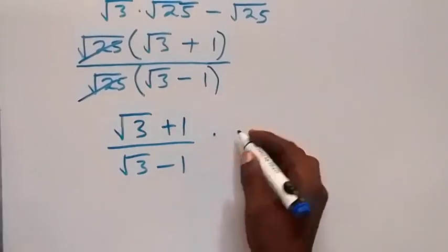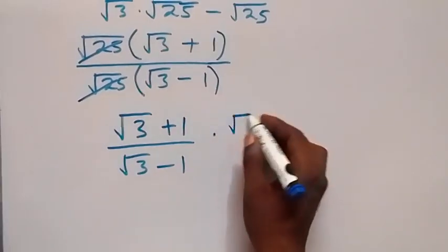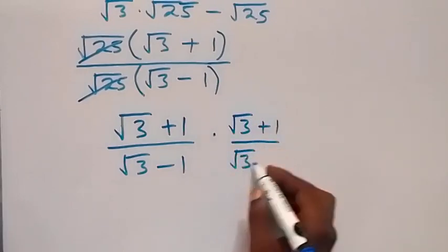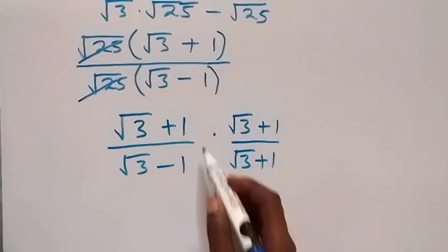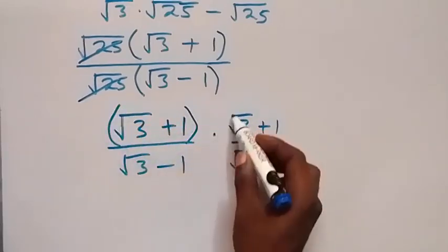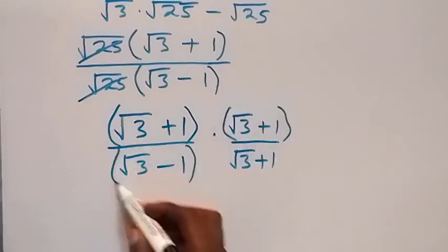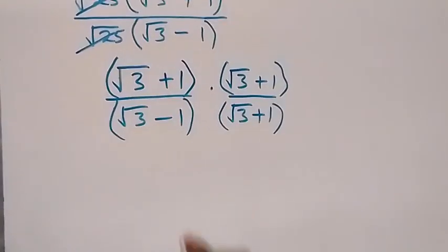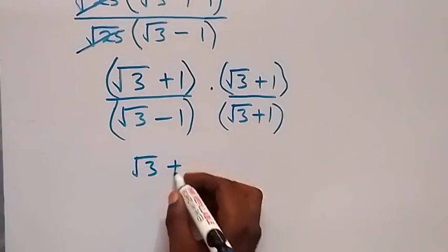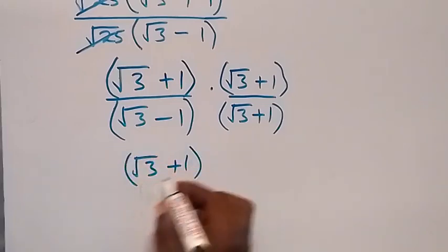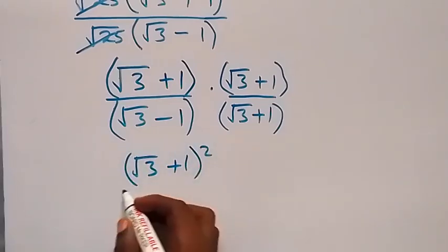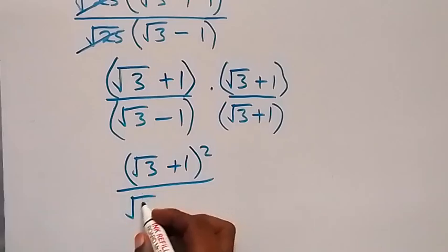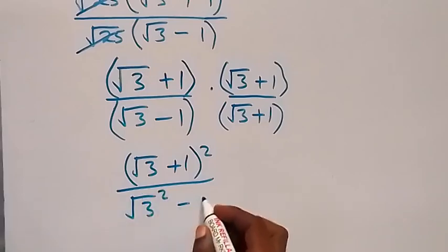The conjugate is root 3 plus 1 over root 3 plus 1. Since we are multiplying, we put this in brackets. The numerator becomes root 3 plus 1, all squared. The denominator follows the conjugate difference of squares form: root 3 squared minus 1 squared.